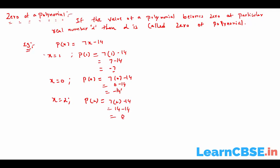So 2 is called the zero of the given polynomial 7X minus 14. When you substituted 1 and 0, you got minus 7 and minus 14, but when you substituted 2 you got 0. Remember: it is not X equal to 0 that matters — whenever the expression becomes 0, the real number you substituted is called the zero of the polynomial. Here we substituted 2 and it becomes 0, so 2 is the zero of the polynomial.